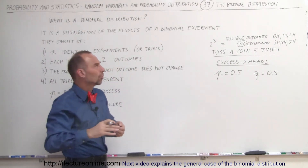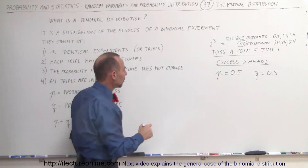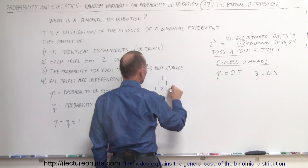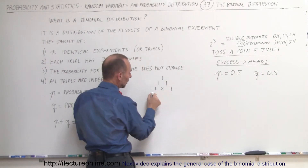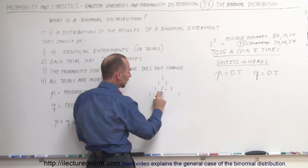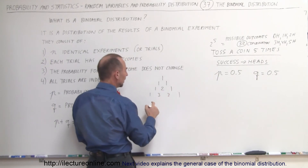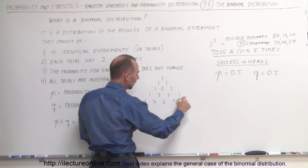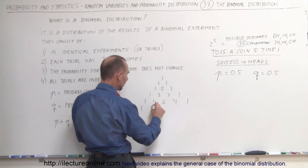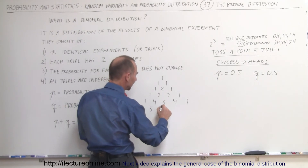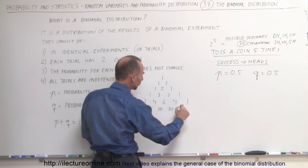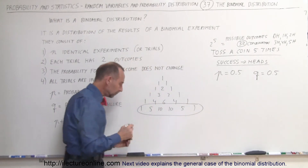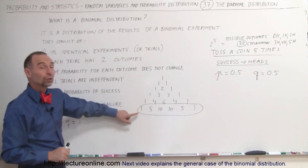So what does that binomial expansion or binomial distribution look like? First, let's get the coefficients correct using Pascal's triangle. We start with 1, 1. Add those to get 1, 2, 1. Then 1, add 1 and 2 to get 3, add 2 and 1 to get 3, and 1. Then: 1 plus 3 is 4, 3 plus 3 is 6, 3 plus 1 is 4, and 1. Finally: 1 plus 4 is 5, 4 plus 6 is 10, 6 plus 4 is 10, 4 plus 1 is 5, and 1. If you add all these numbers together — 1, 5, 10, 10, 5, 1 — you can see they add up to 32.